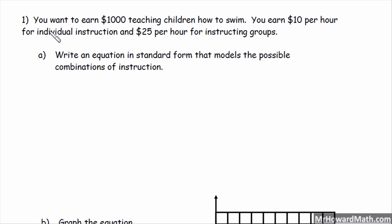Write an equation in standard form that models the possible combinations of instruction. So standard form as a review was AX plus BY equals C. That's the form we wanted in. So we're going to let X equal individual instruction and we'll let Y equal groups, instructing groups.